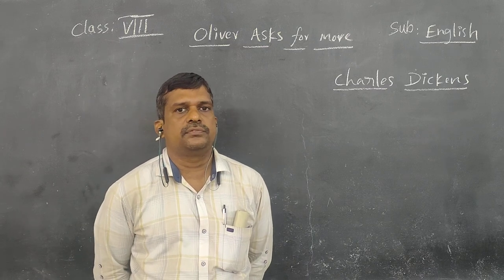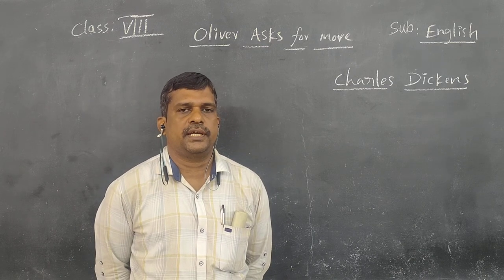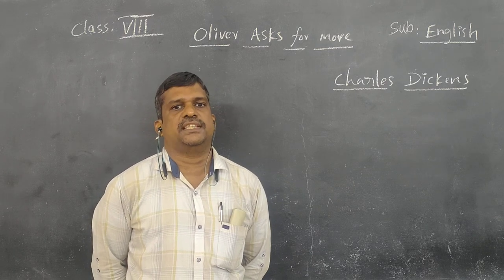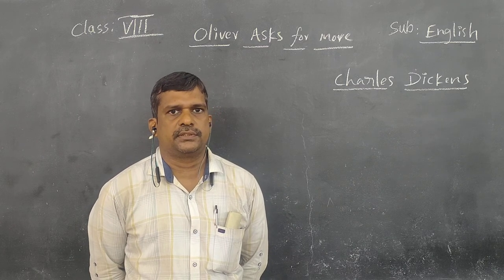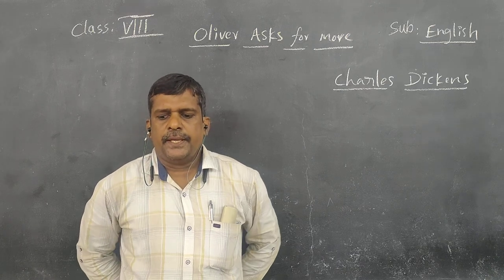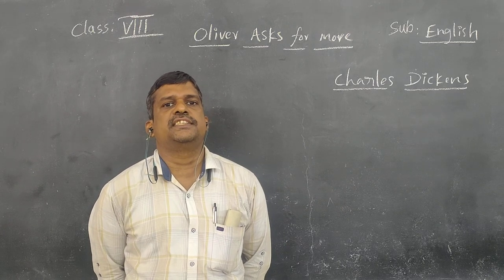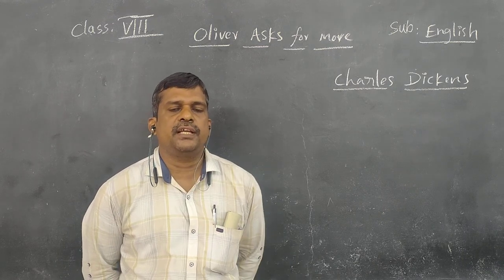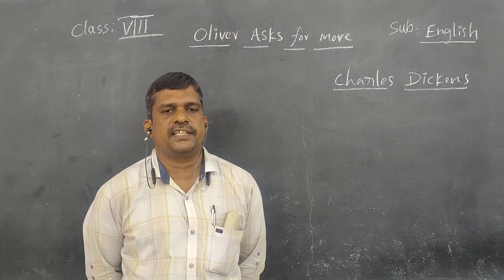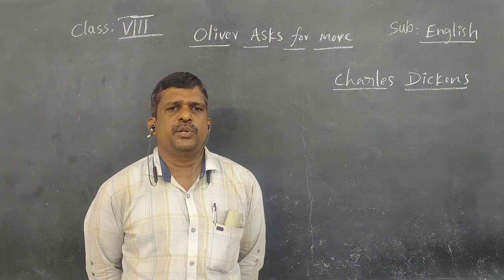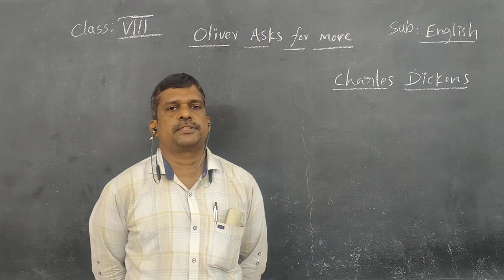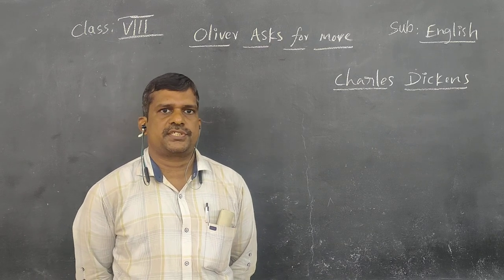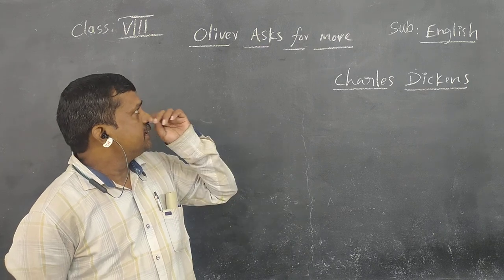Charles Dickens is the writer of that lesson, Oliver Twist. So let us know about Charles Dickens. Charles Dickens is a British novelist — a great writer of British novels. He left school due to his father's imprisonment, and started his writing career while he was working as an office boy. He wrote many worldwide famous novels like Great Expectations, David Copperfield, A Tale of Two Cities, and Oliver Twist. This lesson is from Oliver Twist.